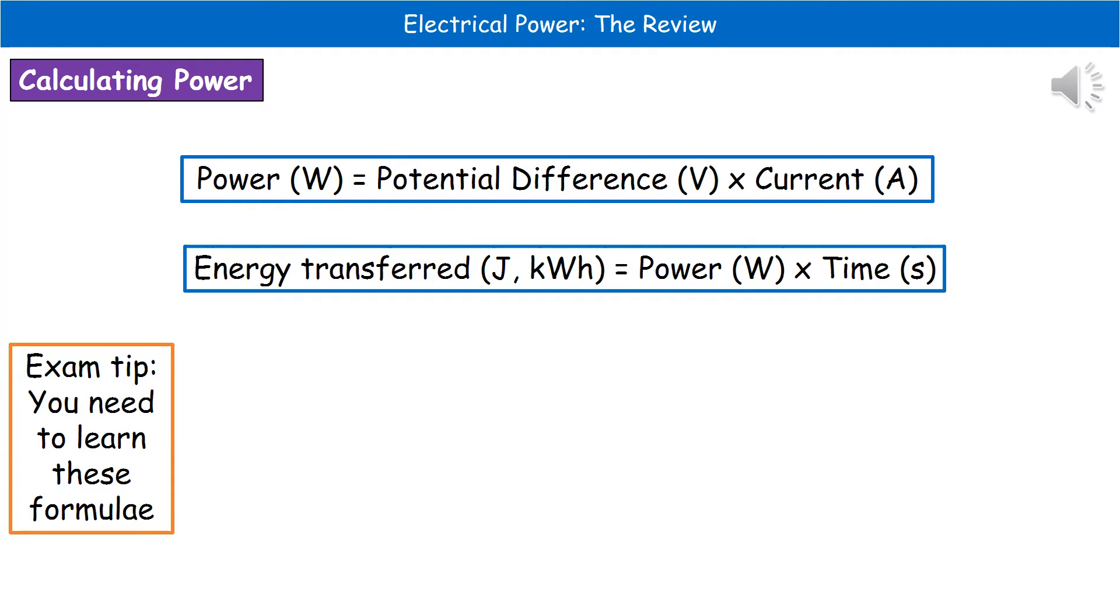We come on to two formulae we need to remember for the exam. These ones won't be given to you on the paper. You've got to remember them. Power in watts is the potential difference times by our current.